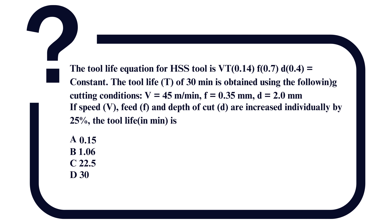The tool life equation for a high speed steel tool is: v × t^0.14 × f^0.7 × d^0.4 = constant. A tool life T of 30 minutes is obtained with cutting speed v = 45 m/min, feed = 0.35 mm, and depth of cut d = 2 mm. If speed, feed, and depth of cut are each increased individually by 25%, the new tool life in minutes is: option A: 0.15, option B: 1.06, option C: 22.5, option D: 30.